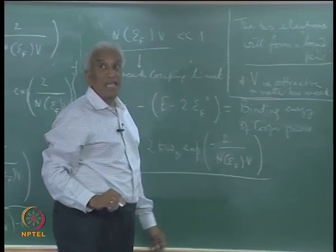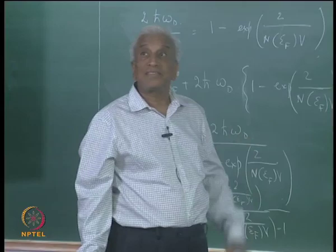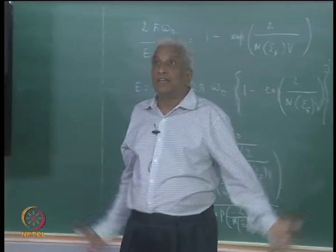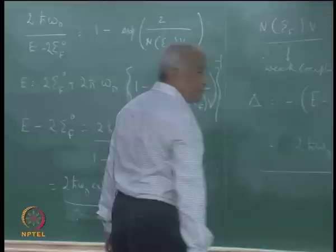Having found the conditions under which pairing will take place, we will now go to the next step of finding how the entire superconductor of, say, 10^24 free electrons will become paired at zero K and form an ordered superconductor at absolute zero. This will be our next step. Thank you.